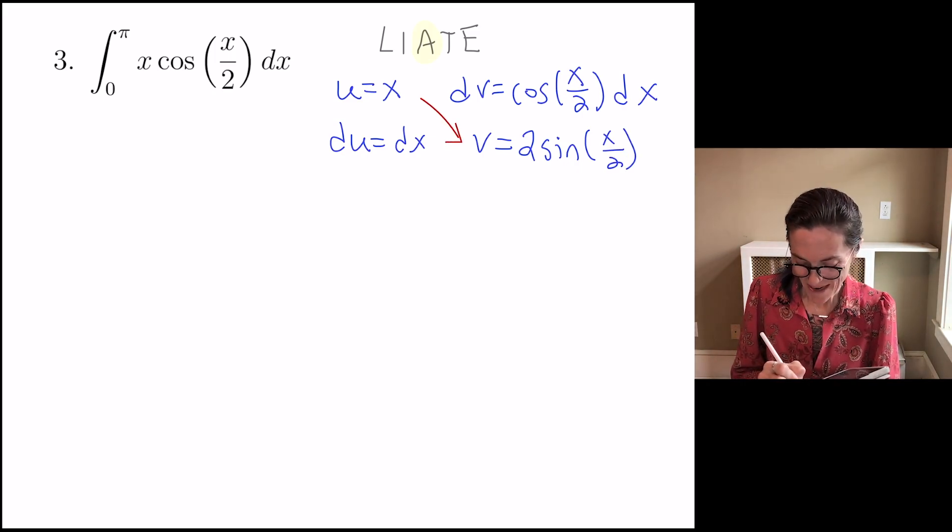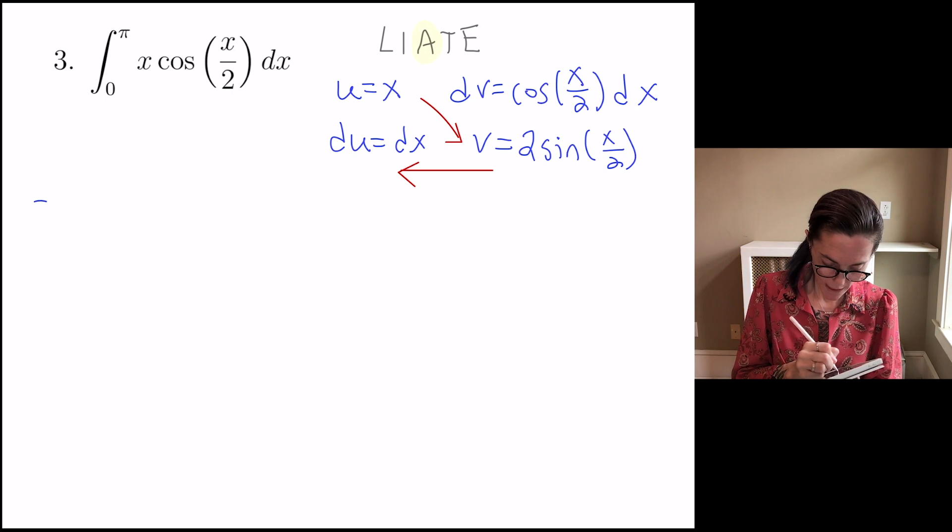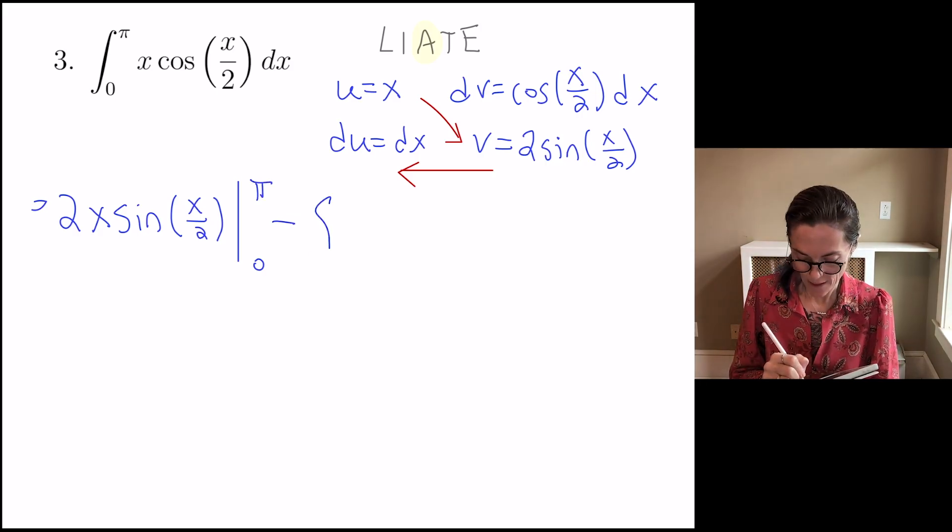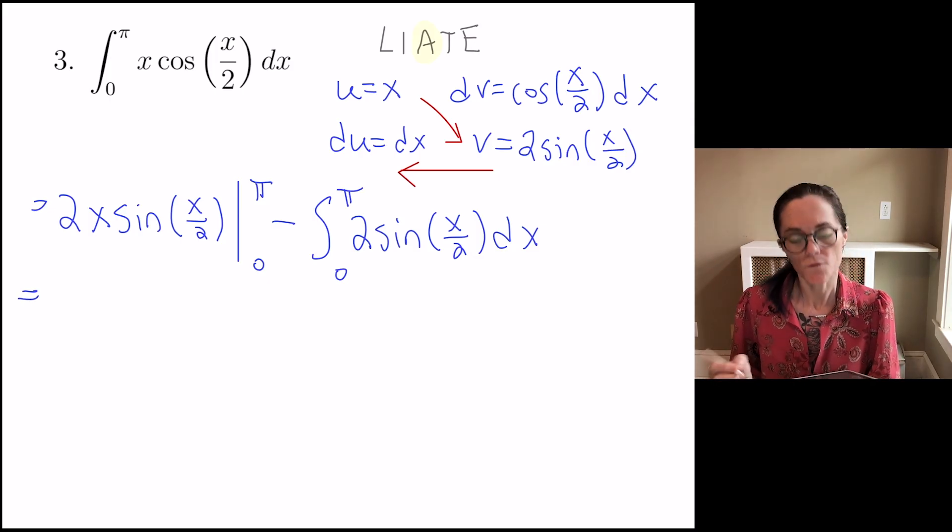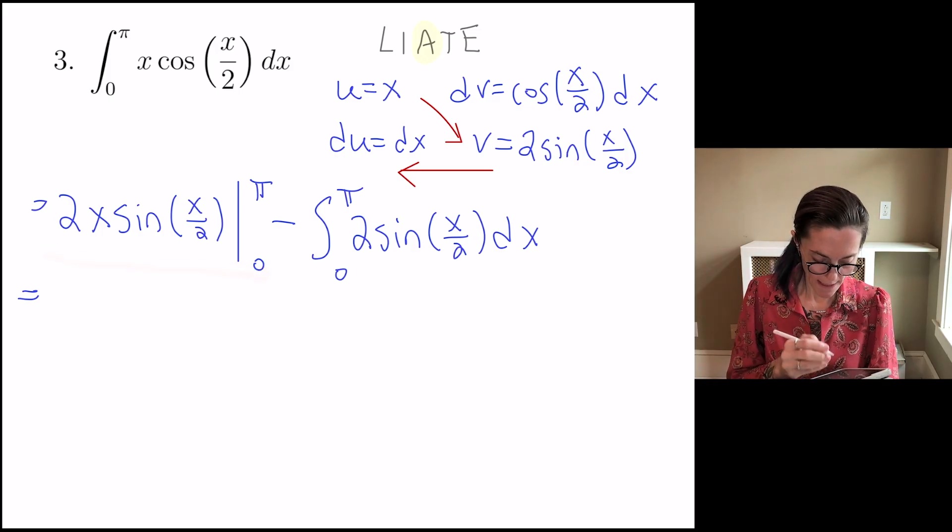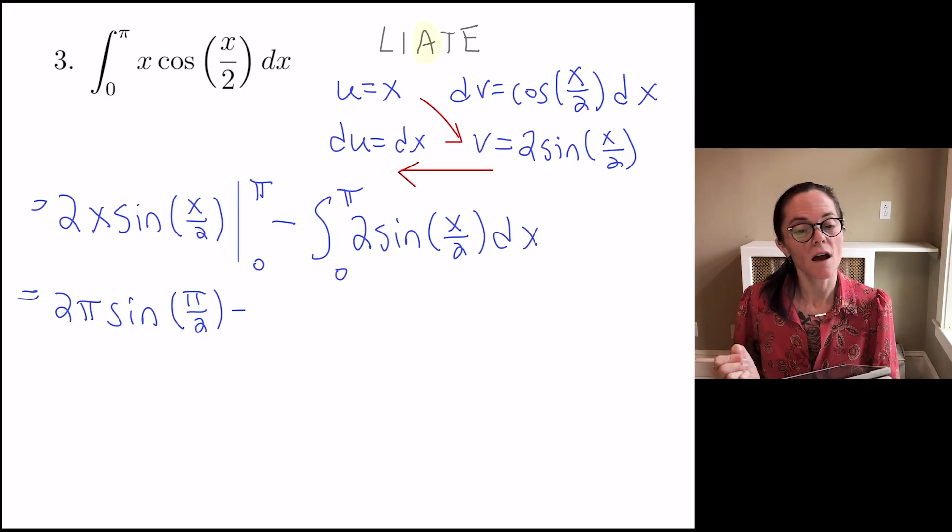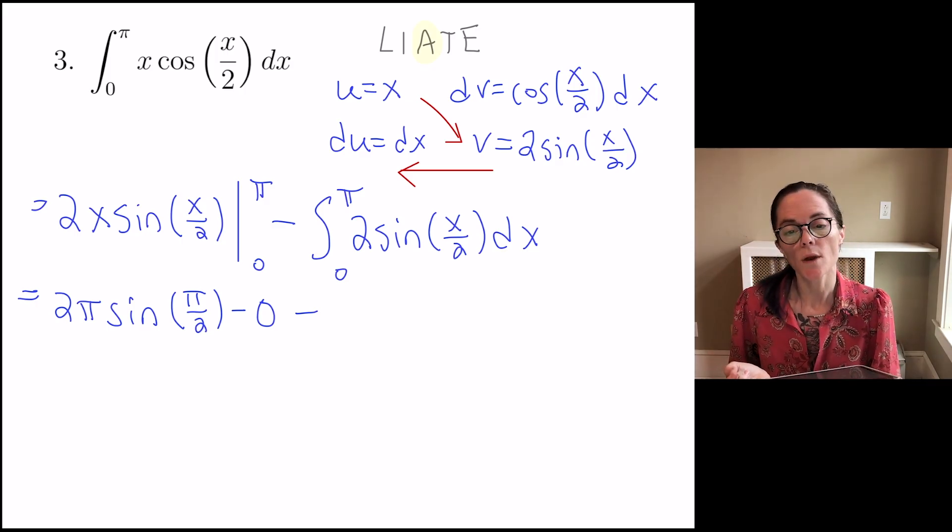Now, uv minus the integral of v du. And it's definite. So we have, this will equal uv 2x sine x over 2, evaluate it between 0 and pi, minus the integral of v du, and it's definite between 0 and pi. This first part, I can go ahead and evaluate. I'll do this in a few steps. We have 2 pi sine pi over 2, and then when you subtract off at 0, we have 2 times 0, well, times something, so this is 0. Now, let's integrate this. When we integrate the sine, let's write down the 2.